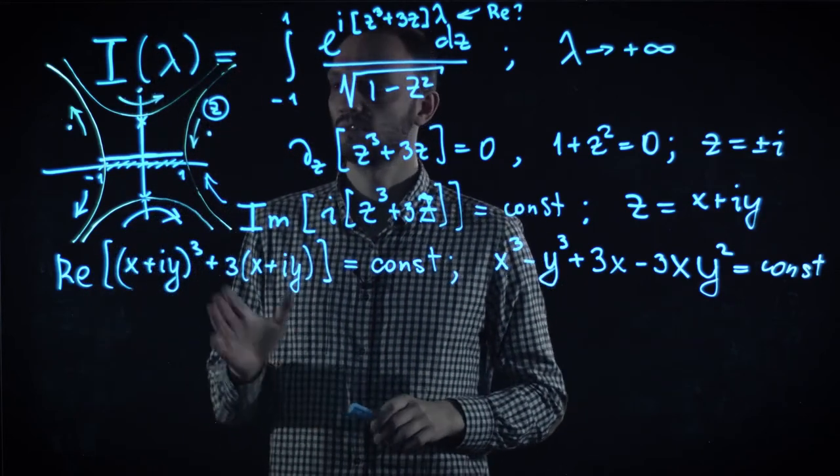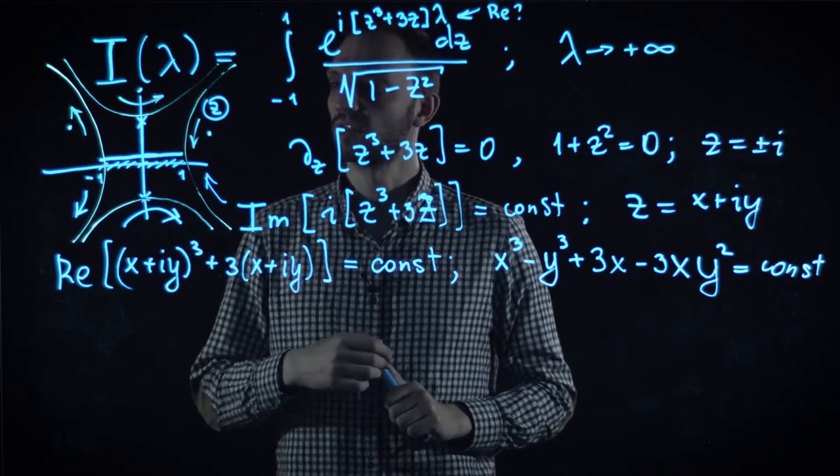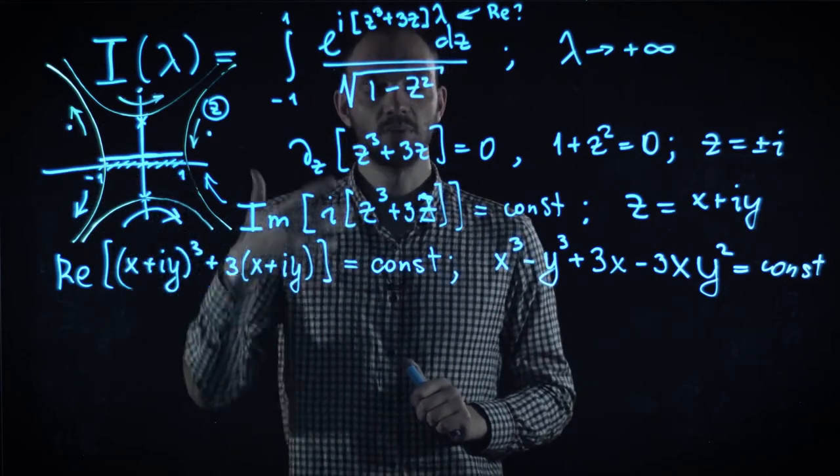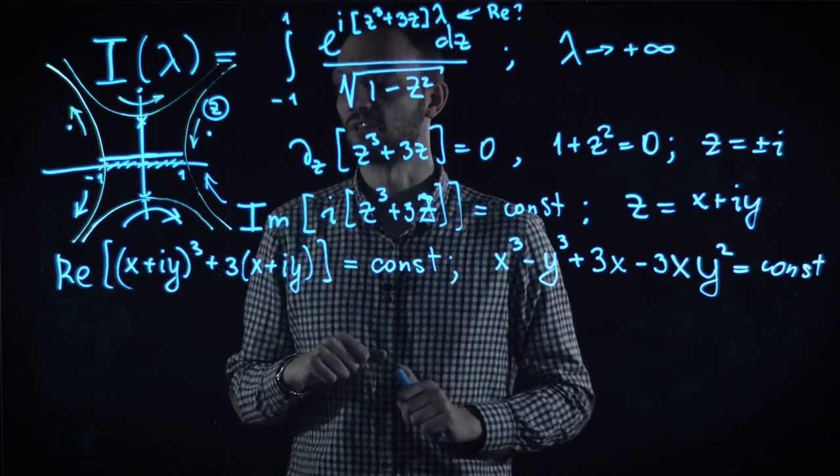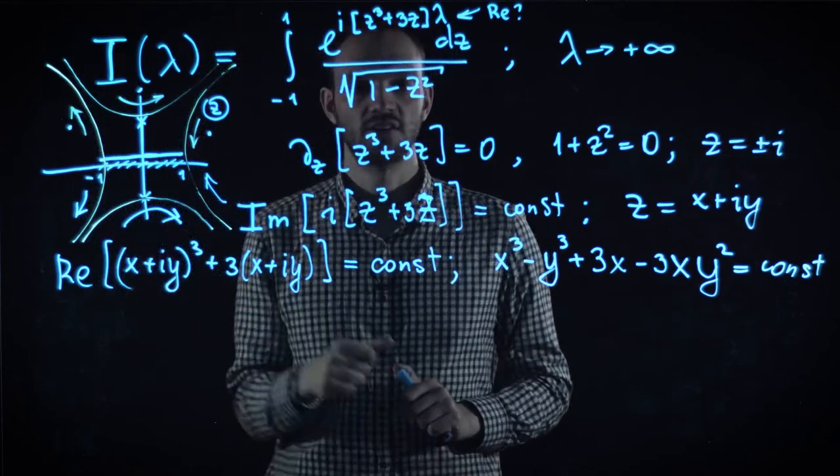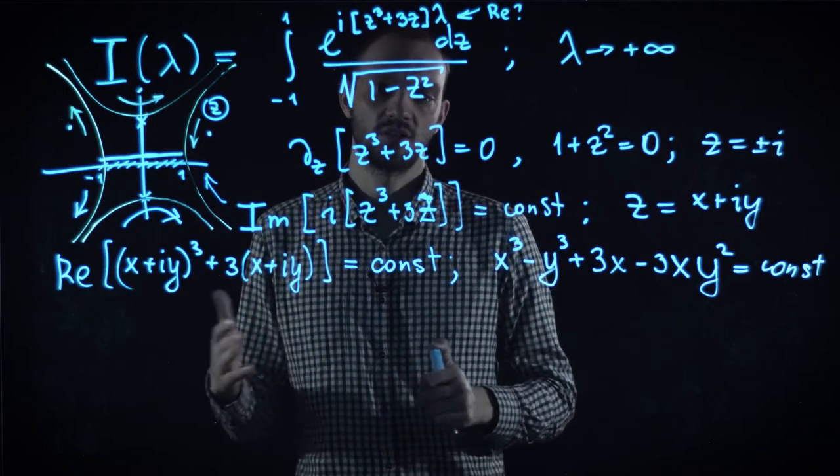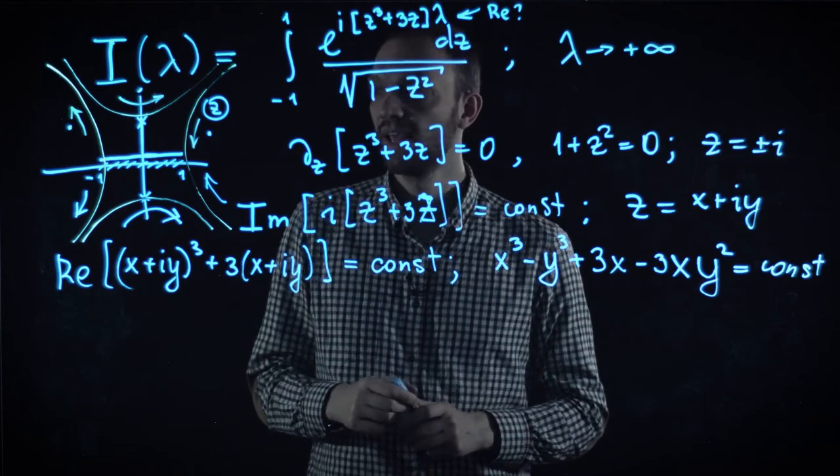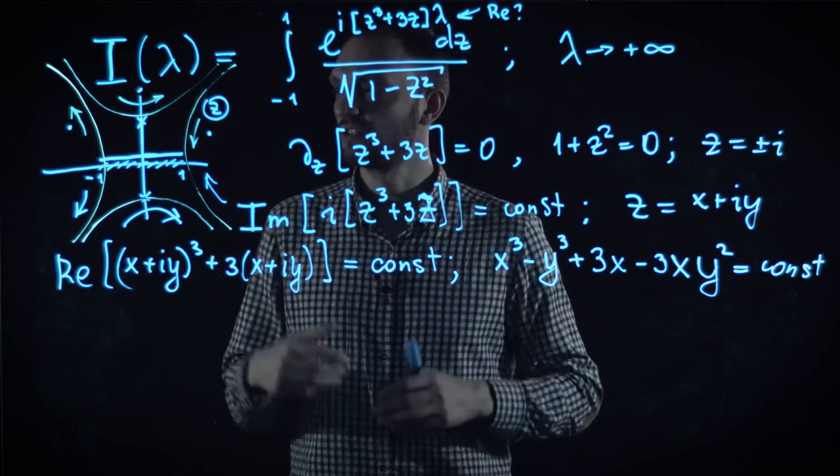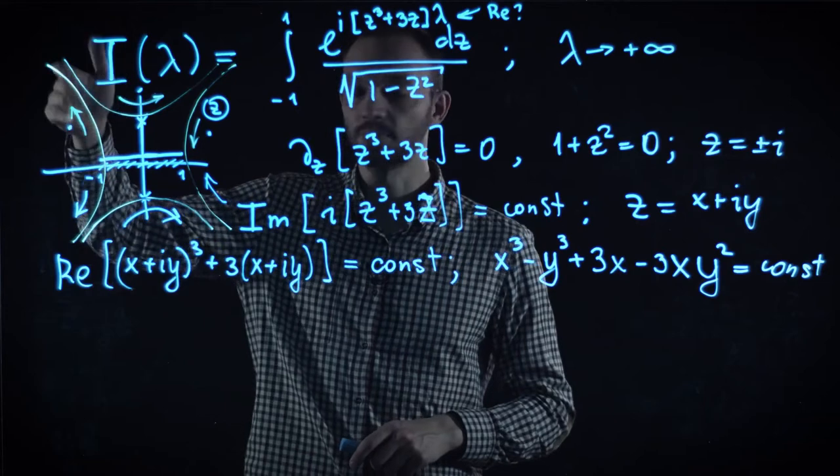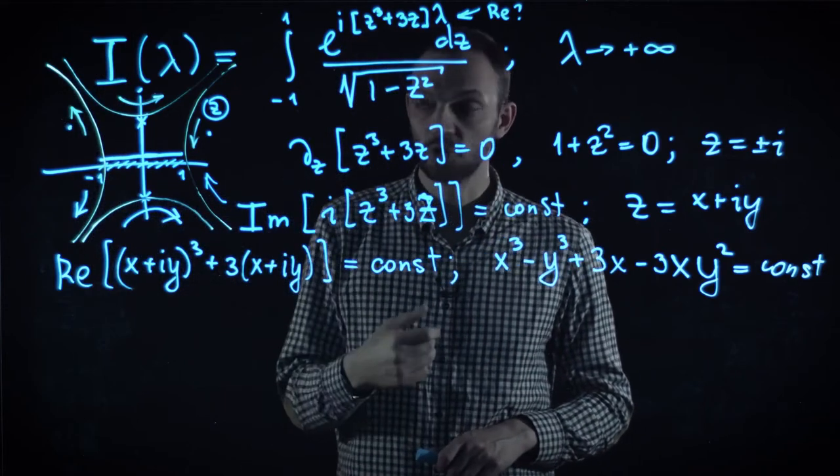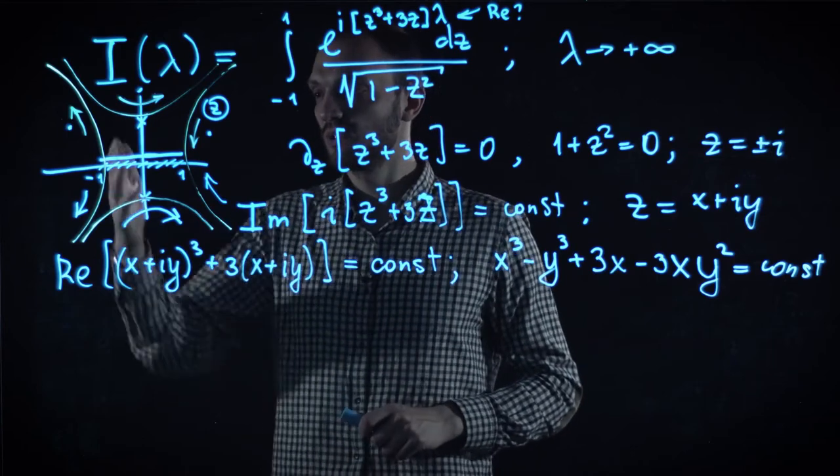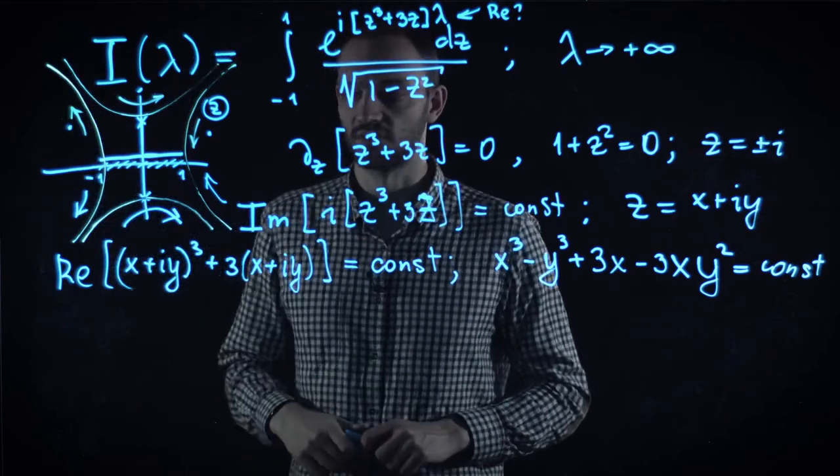And now, we are coming to more or less final point. We deformed our initial, original integral, and remember, it was highly oscillating because of this expression in the exponent, to a set of three integrals. Each of them is quite smooth and without any pathology in the limit of large lambda. And this is the greatest achievement, because we explicitly found lines of the constant imaginary part.